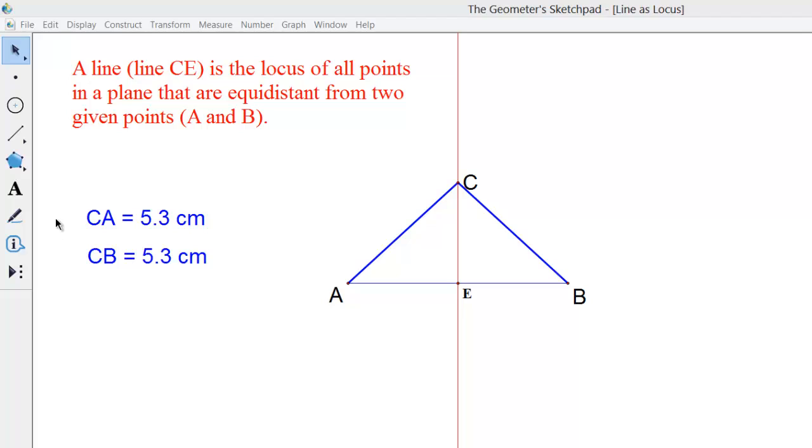We have the measure of CA which is the left side of this triangle and the measure of side CB is the right side.